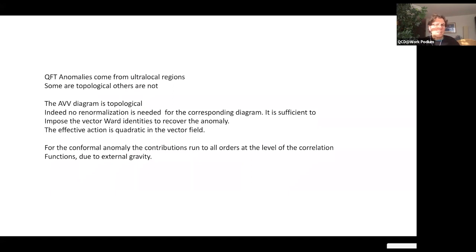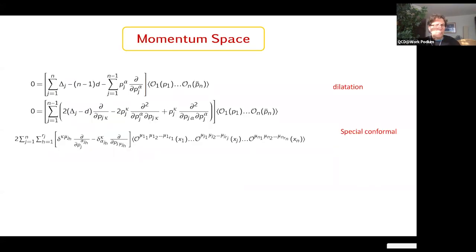The real counter term is the Weyl tensor squared C², which is not topological. So in the conformal anomaly you have both a topological contribution — the E contribution — and a non-topological one, C squared. To see anomalies appearing in correlation functions, you have to go to momentum space. There has been recent work trying to describe correlation functions and solve the conformal identities in momentum space.